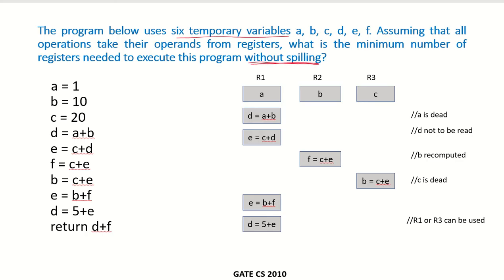What does spilling mean? Spilling means that if a particular variable is not being used for a very long time, it will be stored into the memory and then brought back later from the memory when it is needed.